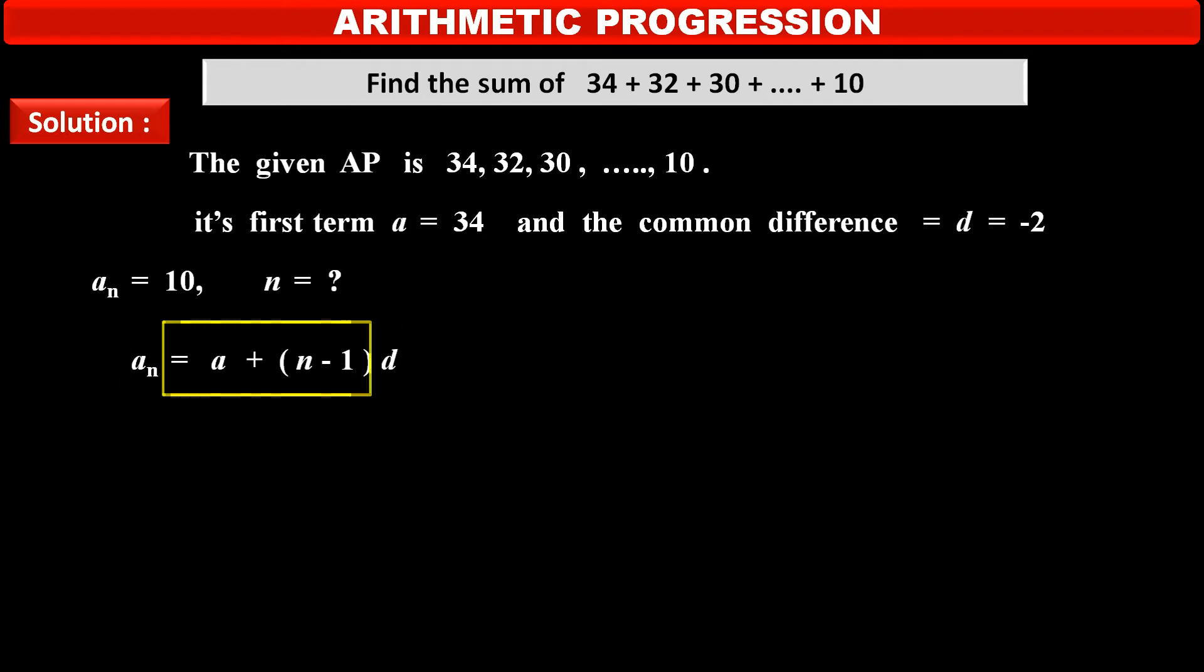So, substituting the values we get value of nth term a_n that is 10 which is equal to first term a that is 34 plus in bracket n minus 1 into common difference minus 2. Solving the above bracket, we get 10 is equal to 34 minus 2n plus 2. Solving the above, we get n is equal to 13.